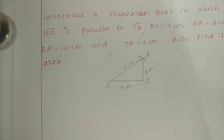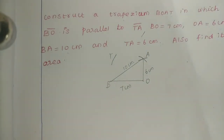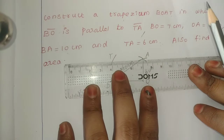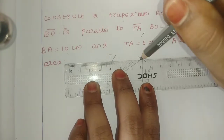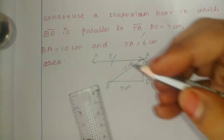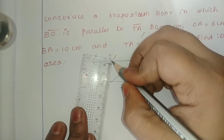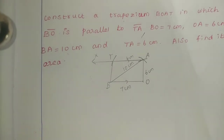Next point is T, and TA is 6 cm. We will attach A and draw a parallel line, since BO and TA are parallel. So we have to make a parallel line. This line is straight along, and the height will be measured. The line will be 6 cm, and lines will be parallel.